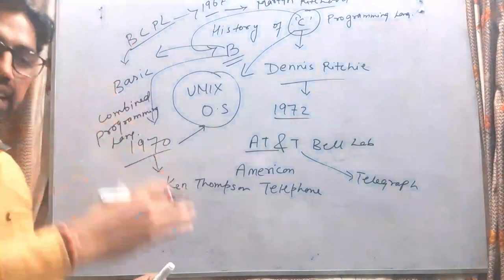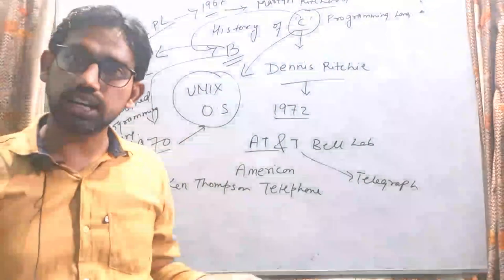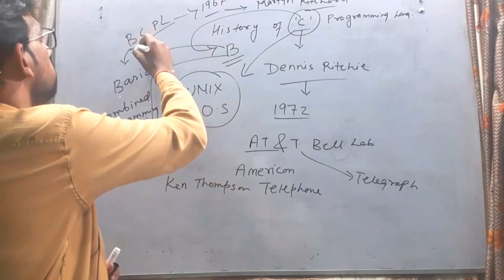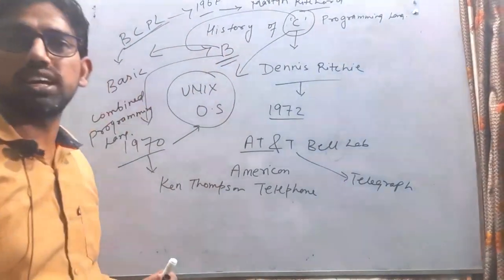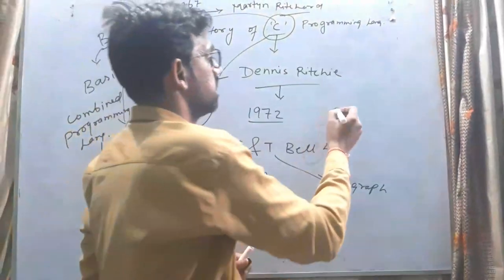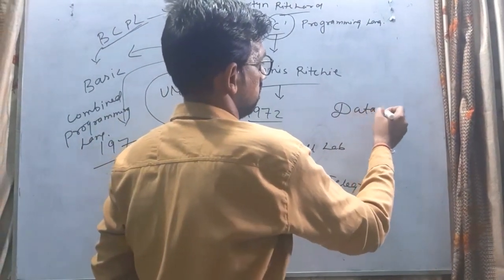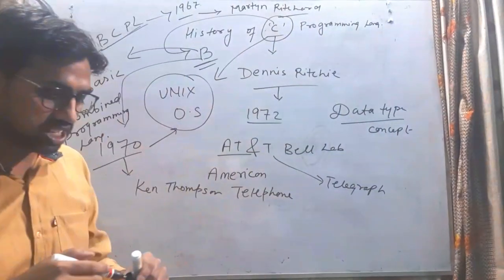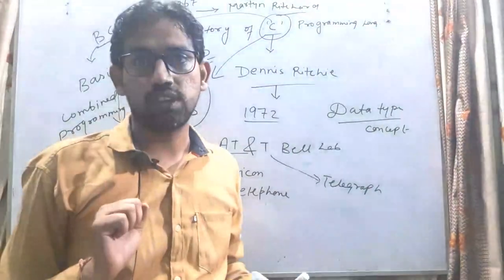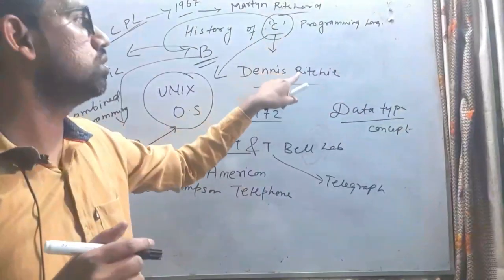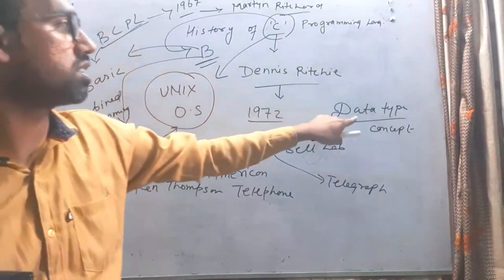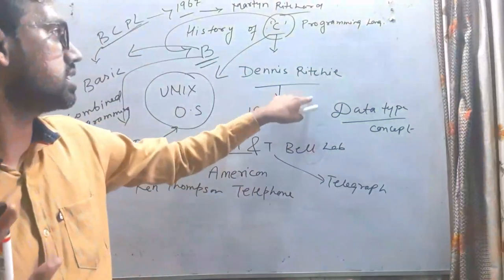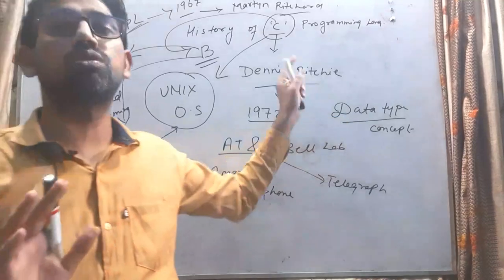C से हम B में आ गए और B से पहले BCPL में भी आ गए। C तक क्यों आए — क्योंकि BCPL और B programming में एक concept की कमी थी। वो concept था Data Type का concept। दोनों languages में Data Type concept की कमी थी। उस कमी को C programming ने दूर किया। Dennis Ritchie ने इन दोनों languages की कमी को पूरा किया और Data Type concept को fully implement किया।